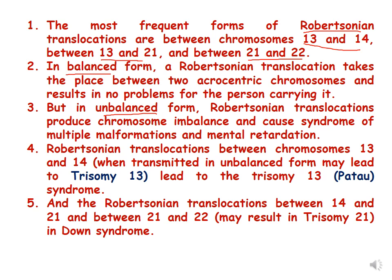Robertsonian translocation between chromosome 13 and 14, when transmitted in unbalanced form, may lead to trisomy of 13, which is also called Patau's syndrome. Robertsonian translocation between 14 and 21, and between 21 and 22, may result in trisomy of 21, which is Down syndrome. We will see how it happens in the next few slides.